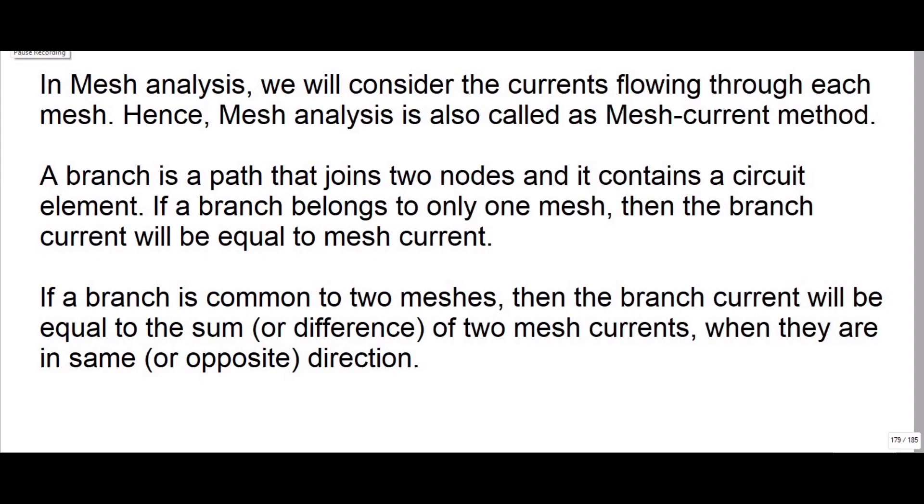If a branch is common to two meshes, then the branch current will be equal to the sum or difference of two mesh currents when they are in the same or opposite direction.